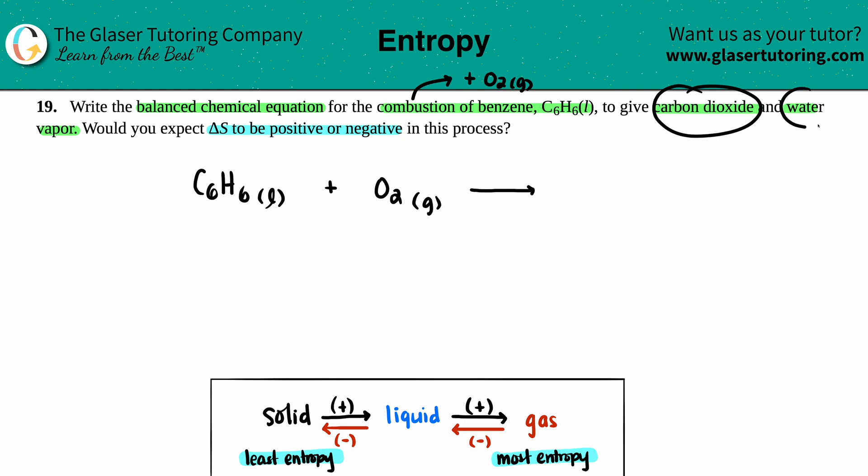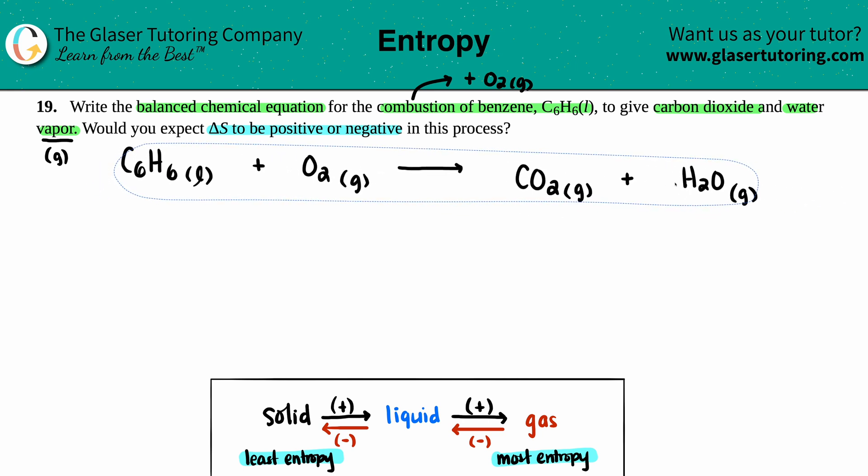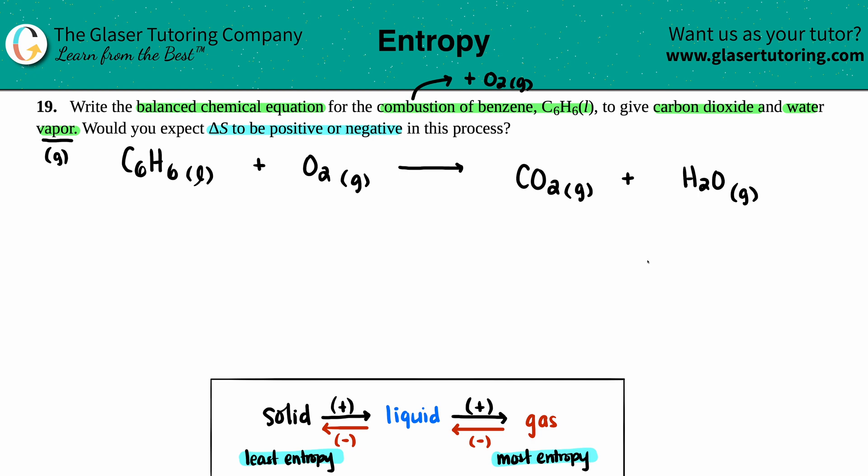That will give us the two products: carbon dioxide and water vapor. Carbon dioxide is CO2, and carbon dioxide is always a gas at room temp, plus water H2O. They did tell me it was a vapor. Keep in mind that vapor is the way of just saying a gas, so we have H2O gas.